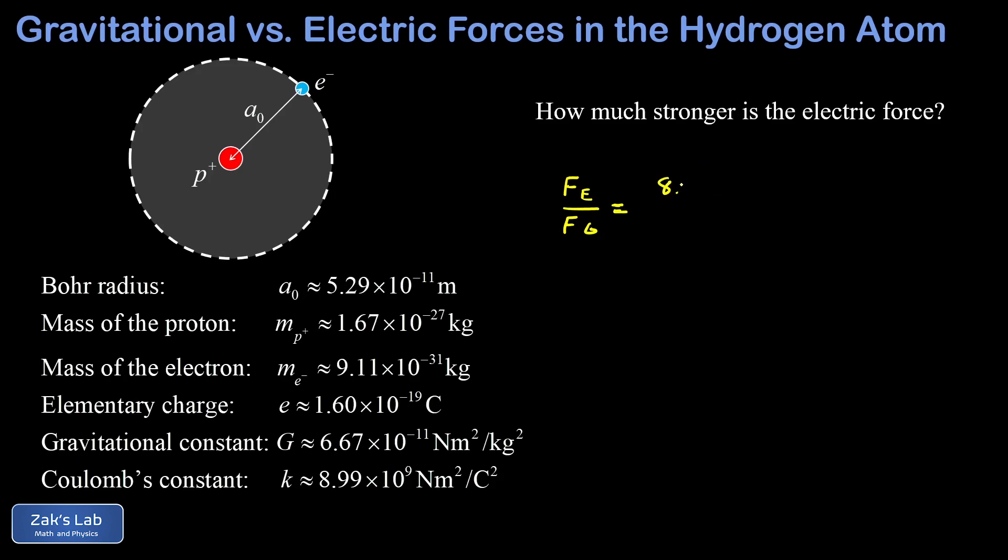So our electric force was 8.22 times 10 to the negative eight Newtons. Our gravitational force was 3.63 times 10 to the negative 47 Newtons. And when we run the numbers on this to three significant digits, we get 2.26 times 10 to the 39.